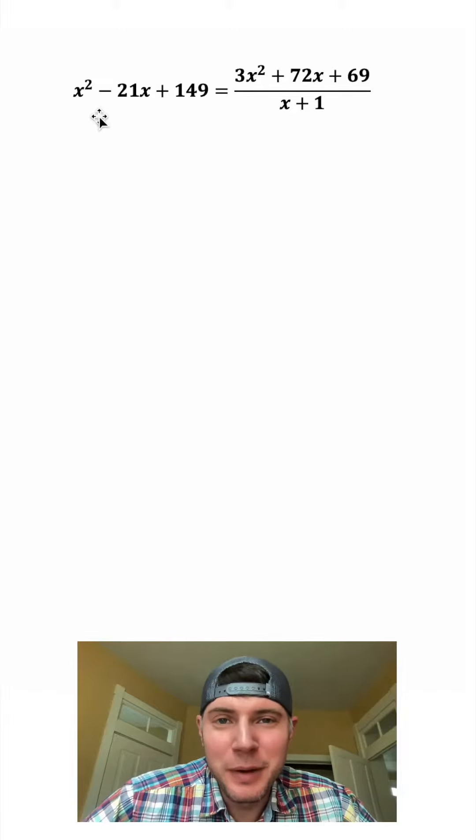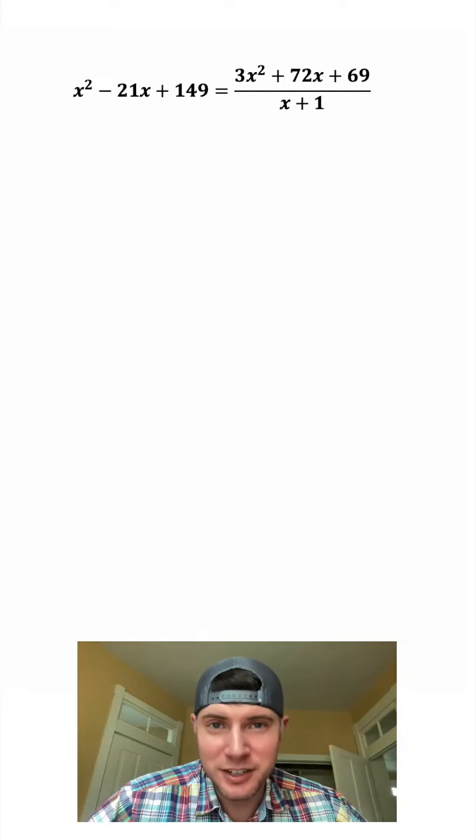Hey guys, this looks like a fun one. x squared minus 21x plus 149 equals 3x squared plus 72x plus 69 over x plus 1. If you want to try it on your own, pause it because I'm going to solve it in 3, 2, 1.